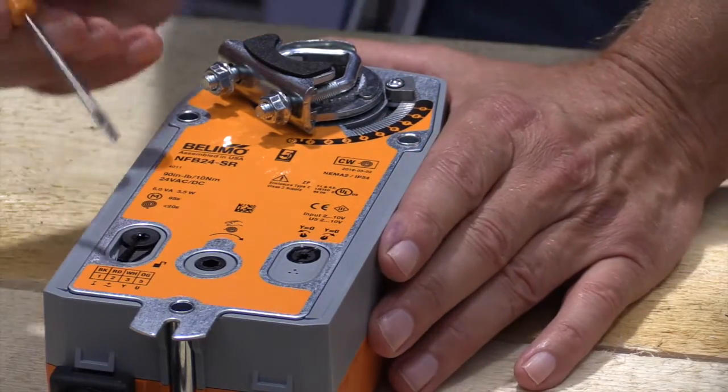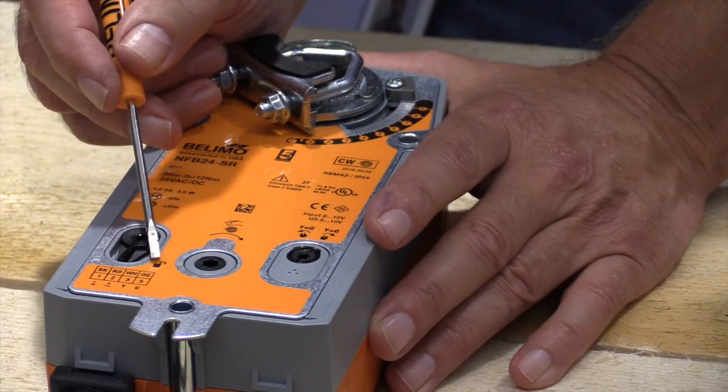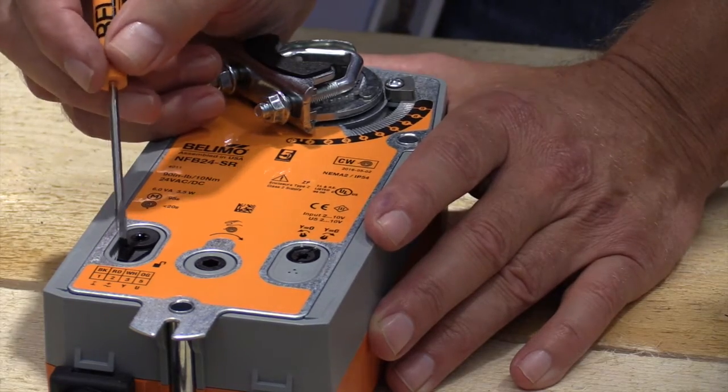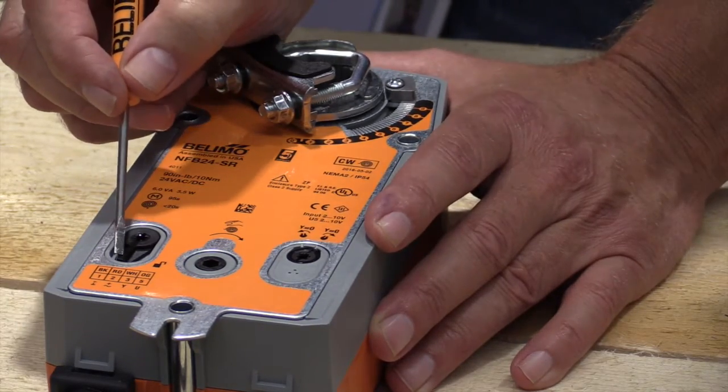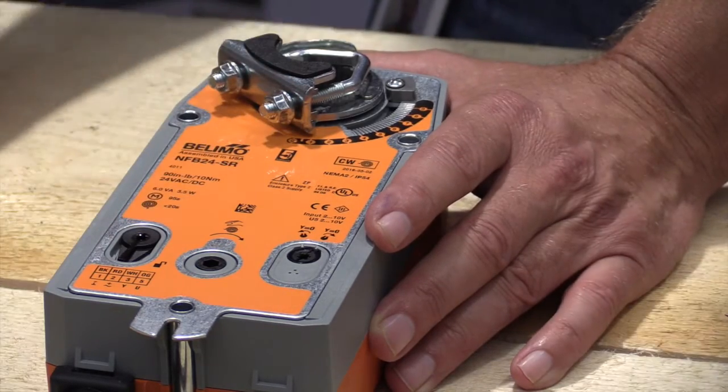I'm going to take and move this hand crank out of the way for now. I want to show you this lever here. I have an unlocked and a locked position. We open this up to five degrees and put this lever in the locked position. That's what's holding it at the five degree location.